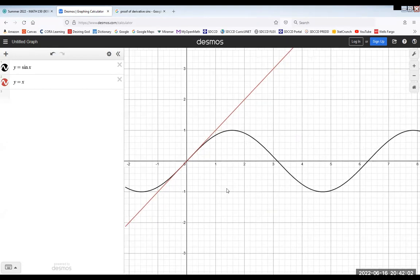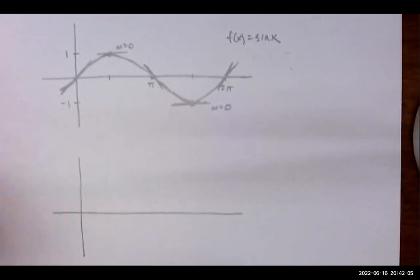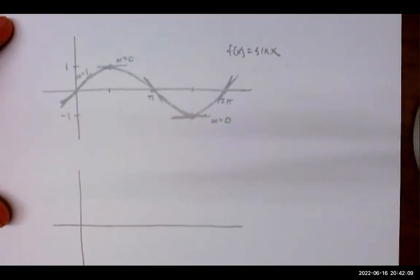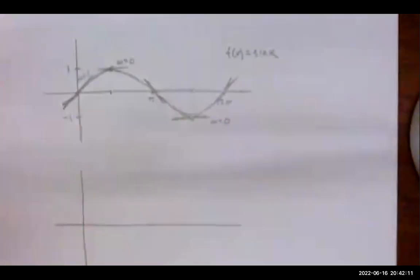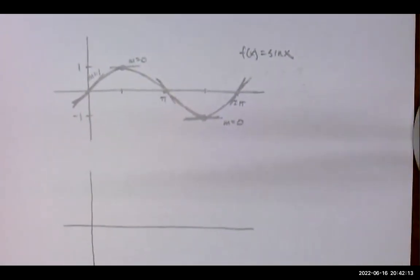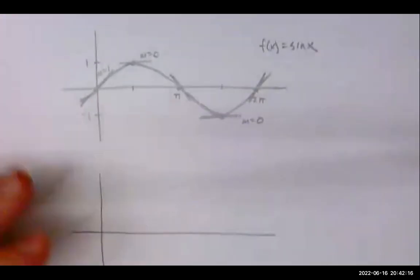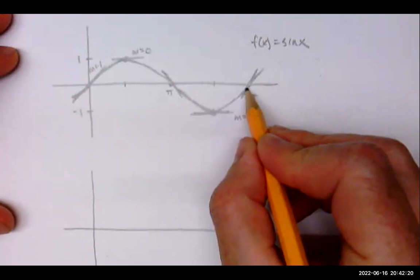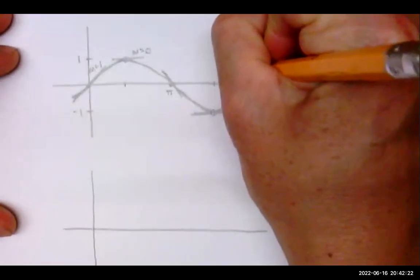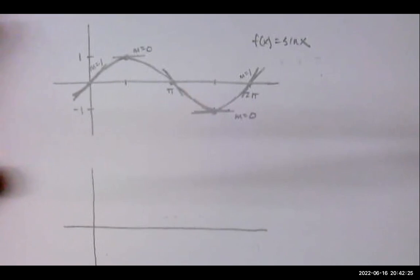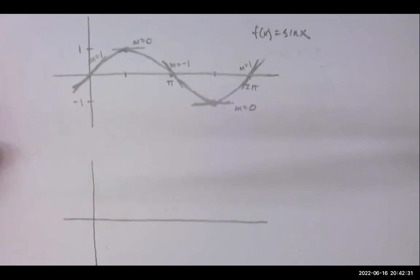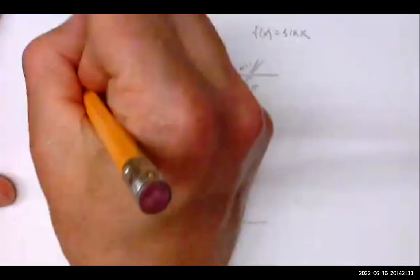Let me come back to the graph. We can tell right here that the slope through the origin is exactly one. It would be the same at 2π because it's oscillating the same way. At π it would have to be a slope of negative one.